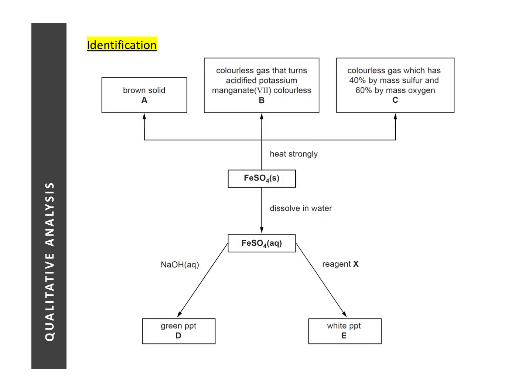In this flow chart question, we are given iron 2 sulfate. And when we heat strongly, we get a colorless gas that turns potassium manganate 7 colorless. We have just seen this earlier. This tells you that it is sulfur dioxide. Then, we also get a gas which has sulfur and oxygen, 40% sulfur, 60% oxygen.